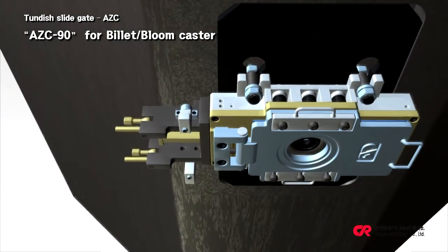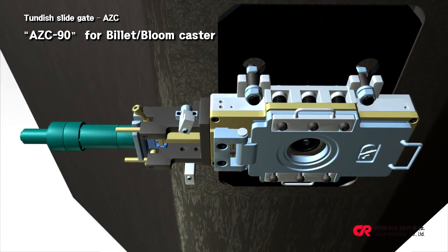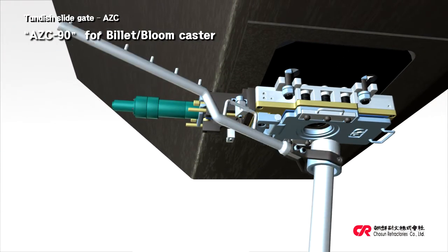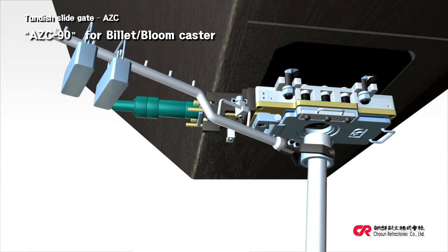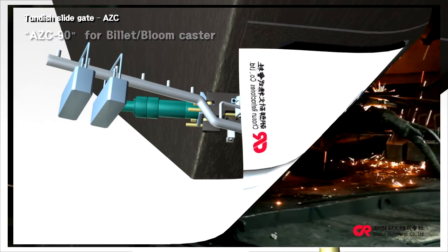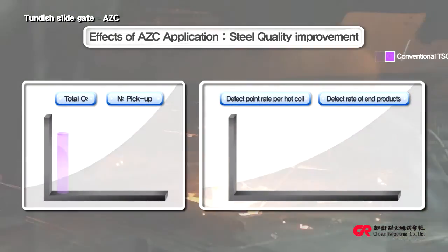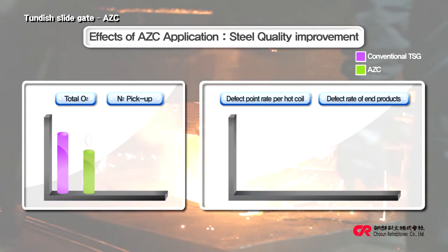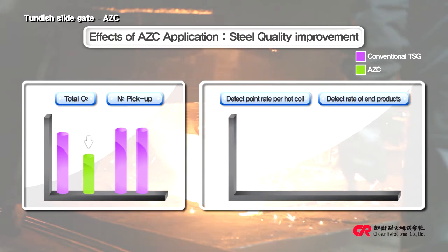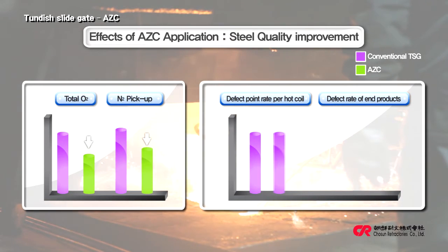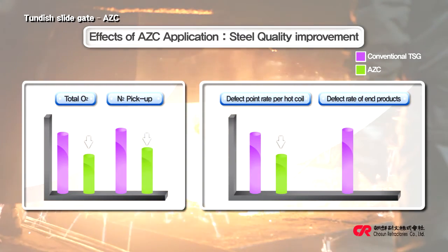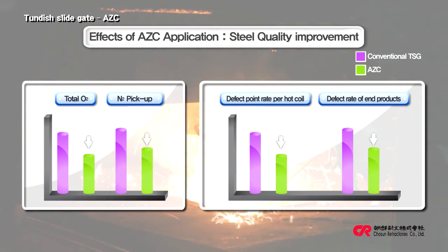Don't worry about quality — our closed-type tundish slide gate is your best alternative solution. Tests have found that it helps reduce the total oxygen in molten steel and decrease the nitrogen pickup during casting. Accordingly, our end products show a reduction of defects per coil and a lower defect rate.